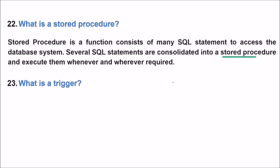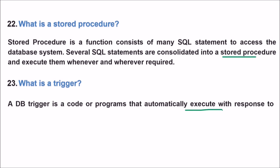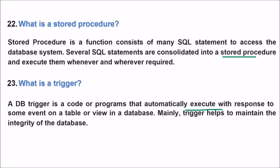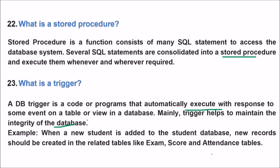What is a trigger? Just like in normal life, when your teacher tells you there will be an exam the day after tomorrow and you immediately start studying — that is a trigger. In databases, a trigger is a piece of code that executes automatically in response to some event on a table or view. Many triggers help maintain the integrity of the database. For example, when a new student is added to a student database, new records should automatically be created in related tables like exams, attendance, and other tables.